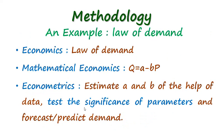To understand how econometrics works, we take an example of the law of demand. The law of demand is provided by economics and it qualitatively explains that there is an inverse relationship between the price of a commodity and the quantity demanded. Then comes the role of mathematical economics, which converts that law in terms of a mathematical equation: Q equals a minus bP, showing the inverse relationship between quantity demanded and price level.